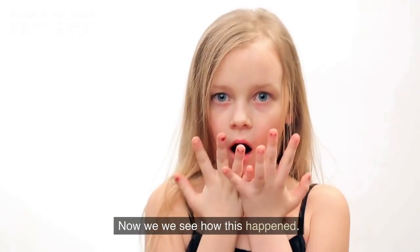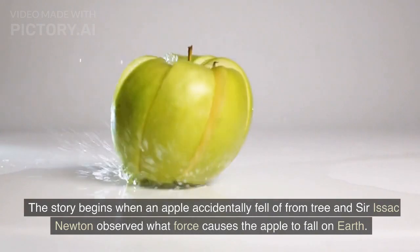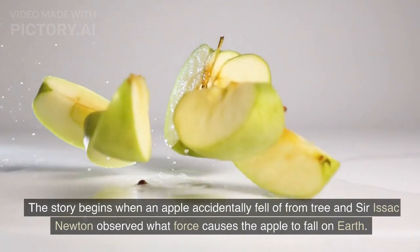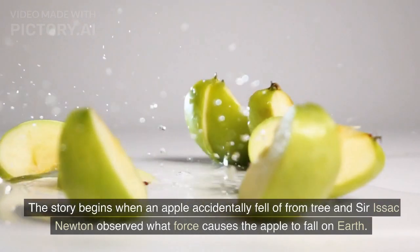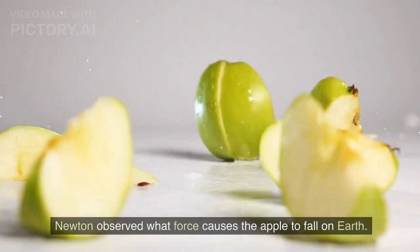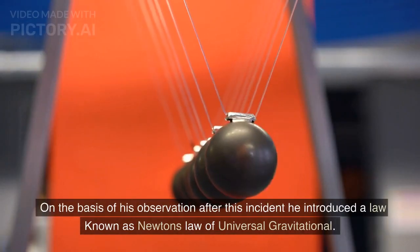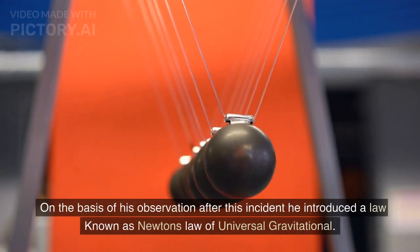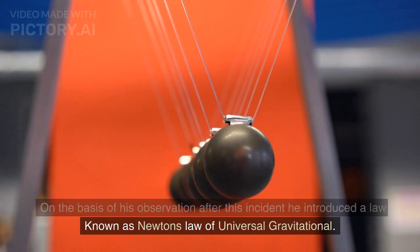Now we see how this happened. The story begins when an apple accidentally fell from a tree, and Sir Isaac Newton observed what force causes the apple to fall on Earth. Why does it not remain in air? Based on his observations after this incident, he introduced a law known as Newton's law of universal gravitation.